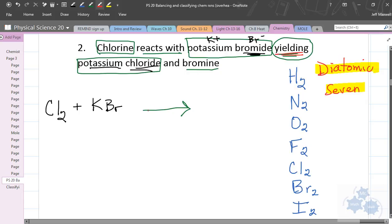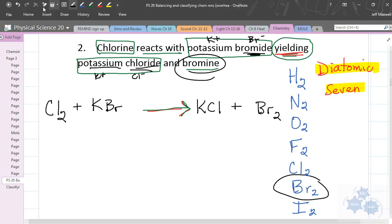Yielding, we already said that yielding is this arrow here. Potassium chloride, well, that's K+, and Cl-, so that's KCl.